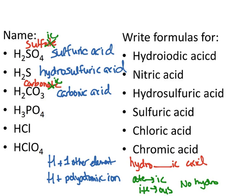The next one, again, H and a polyatomic ion. No hydro in front. What ion is that? That is phosphate. What does ate turn into? Ate turns back into ic. And we said for phosphorus and sulfur, we keep that extra syllable in. So this is phosphoric acid. No hydro in front.